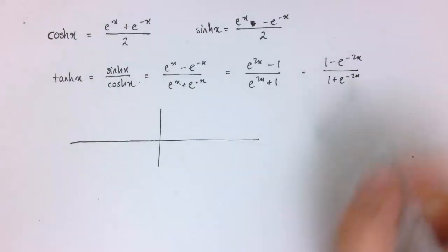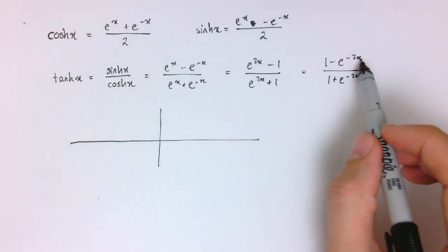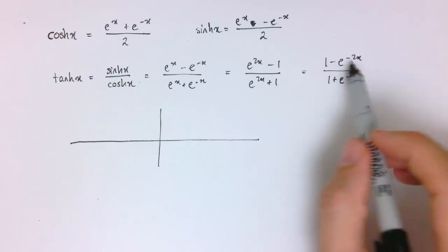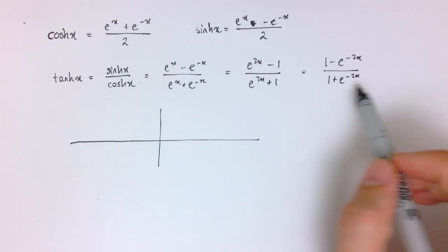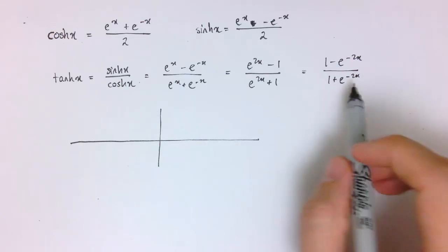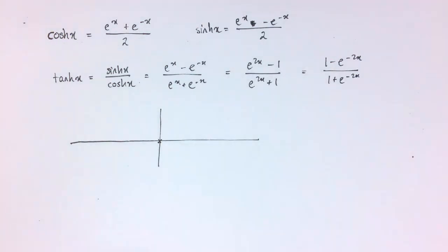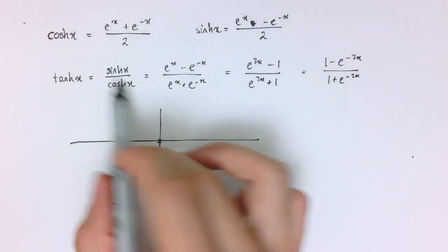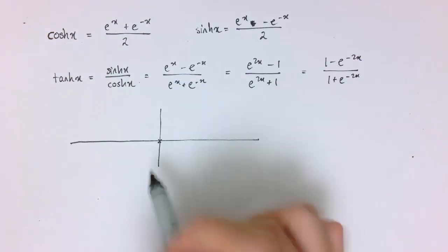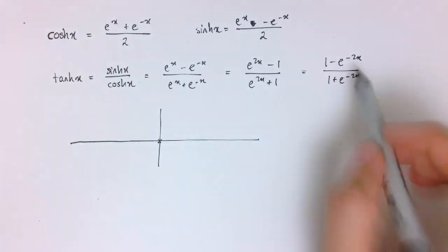Let's start by seeing if there are any axis crossing points. If you put x equals 0 in here, you'd get 1 minus e to the 0, so that'd be 1 minus 1, that'd be 0 on top, divided by 1 plus e to the 0, which would be 2, so I'd get 0. So this graph does go through the origin, of course, where sinh is 0 at 0 and cosh isn't. That is the only axis crossing point.